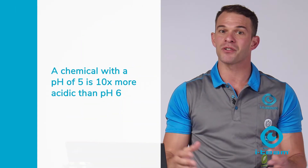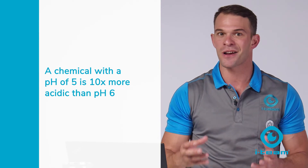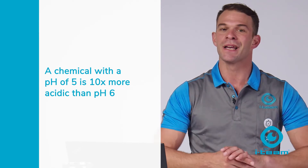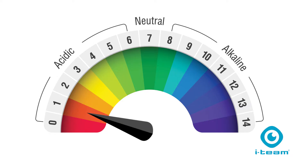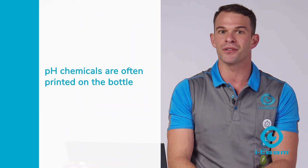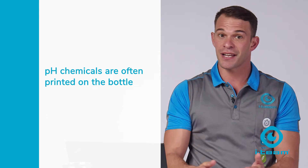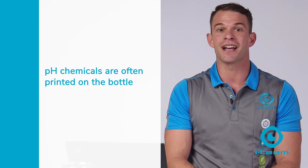That means a chemical with a pH of 5 is 10 times more acidic than pH 6, while pH 1 is a hundred thousand times more acidic than pH 6. You can often find the pH of a chemical printed on the bottle. If it's not there, it'll definitely be on the product safety data sheet.